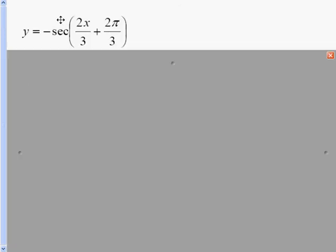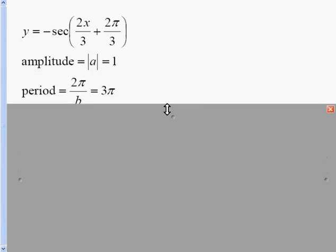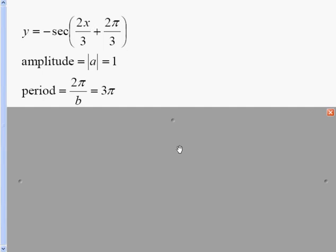Y equals negative secant of 2x divided by 3 plus 2π over 3. We have a negative on the outside, so we're going to be starting at a minimum point. Our amplitude is 1, absolute value of a. Our period is 2π over b, so 2π divided by 2 thirds. Dividing by 2 thirds, you're going to want to multiply by 3 halves, and 2π times 3 halves—the 2s would cross out, we'll be left with 3π.